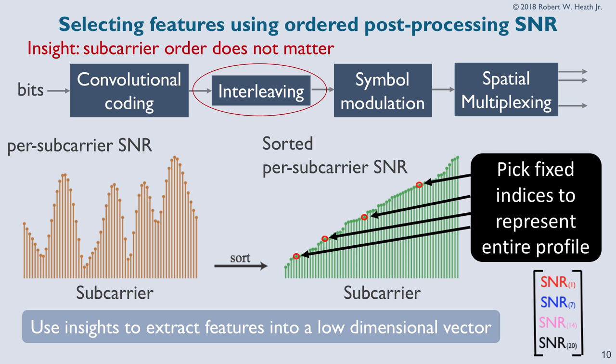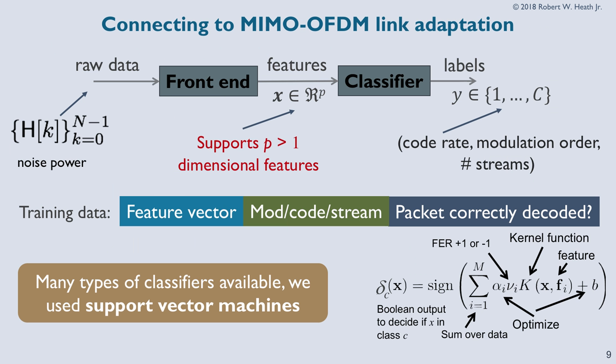Then it was a matter of figuring out which subcarriers to take and how many to grab — the grad student spent a lot of time working on that. Through experimentation and implementation, we converged on a solution where we build the feature vector from four SINR values. The numbers were something like the 1st, 7th, 14th, and 20th worst — not necessarily the worst one, not the best, but some in the middle. That engineering insight went into designing the front end, so we could pop that into an off-the-shelf machine learning classifier.